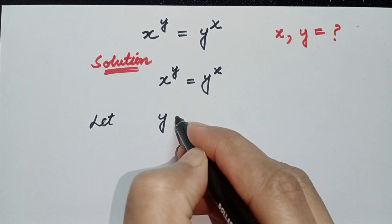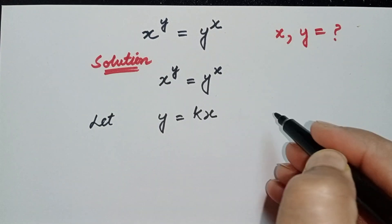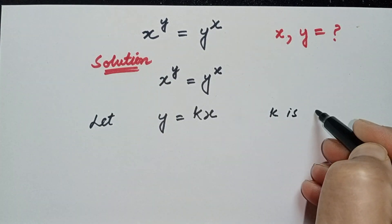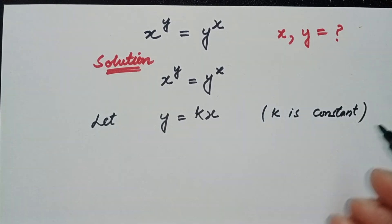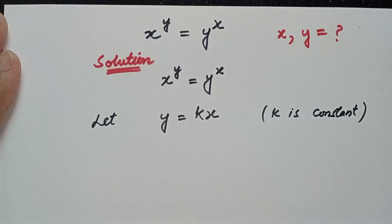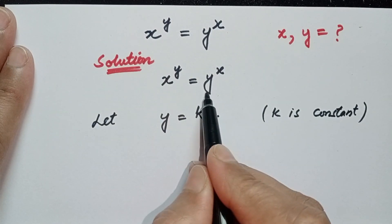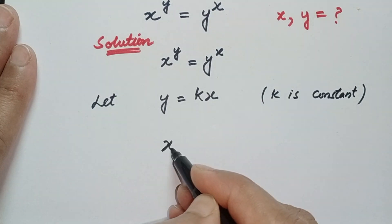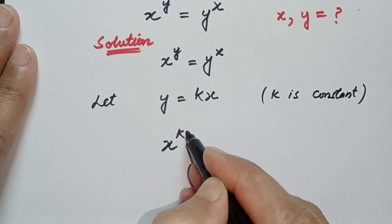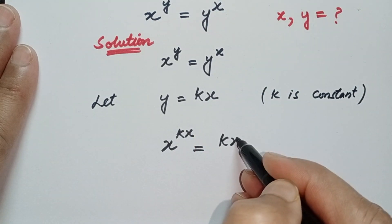Let y be equal to k times x, where k is a constant. We plug in the value of y in the above equation. Our expression becomes: x to the power kx is equal to kx to the power x.